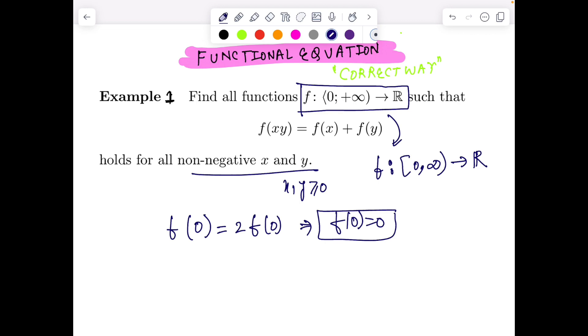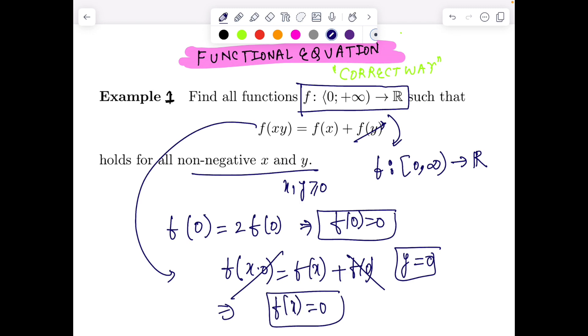Since xy is non-negative, the best choice is to put x and y both 0. That gives f(0) = 2f(0), and from here we get f(0) = 0. This is always a starting point. Now putting x = 0 in the equation gives f(0) = f(x) + f(0), so f(x) = 0 for all x in [0,∞). This function has only one solution which is f(x) = 0.